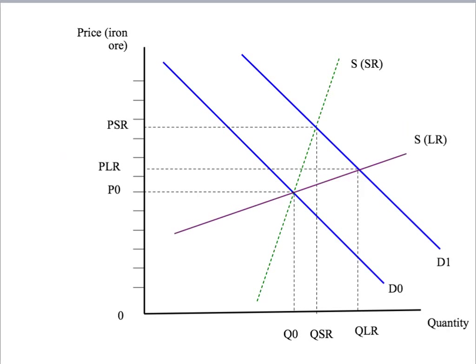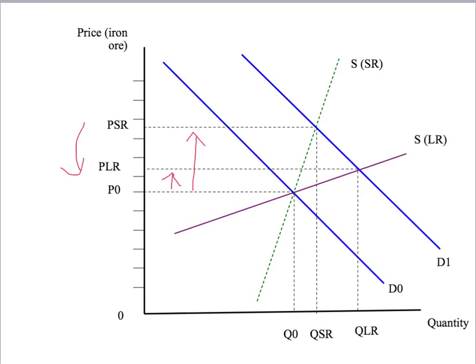Now on this diagram we have a long-run supply curve, and we're looking at the equilibrium between long-run supply and our new demand D1. That gives a price of PLR and a quantity of QLR. The price rise in the long run is not nearly as big as the price rise in the short run — PLR is smaller than PSR. However, our quantity change in the long run is much bigger than our quantity change in the short run.